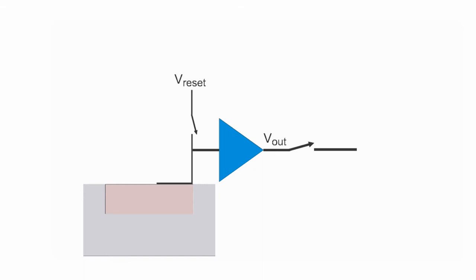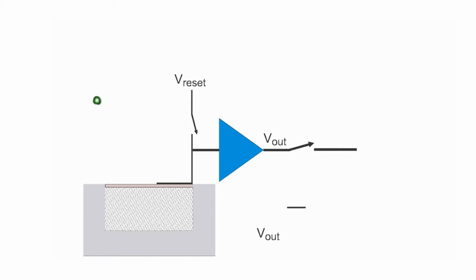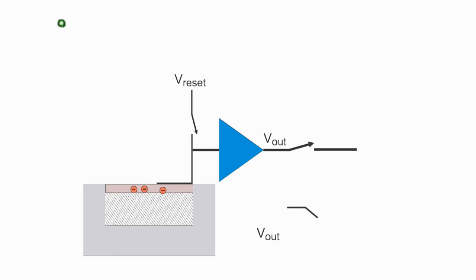The photodiode is reset. When the reset is removed, incoming photons create photogenerated charge. The photogenerated charge creates a voltage on the output of the amplifier. That voltage is read out when the row select transistor is activated.